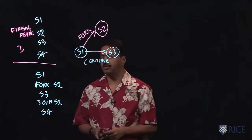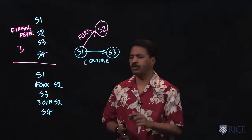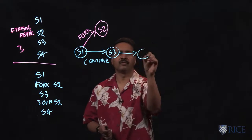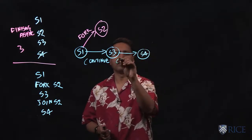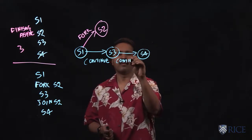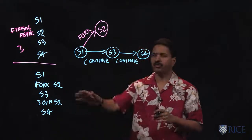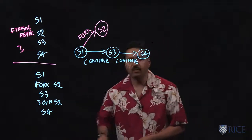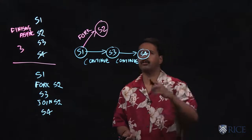And after s3, the same task wants to continue on to s4. But there's this join over here. So for that we have a different kind of edge called the join edge.